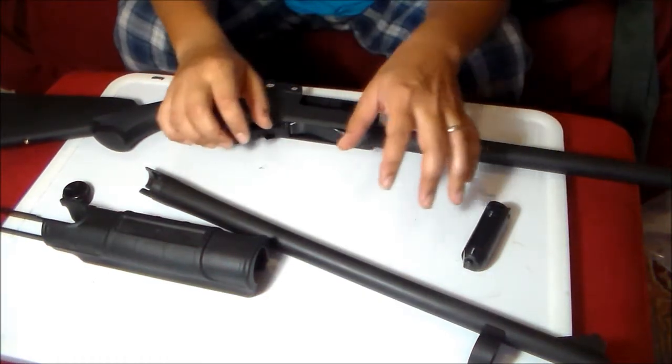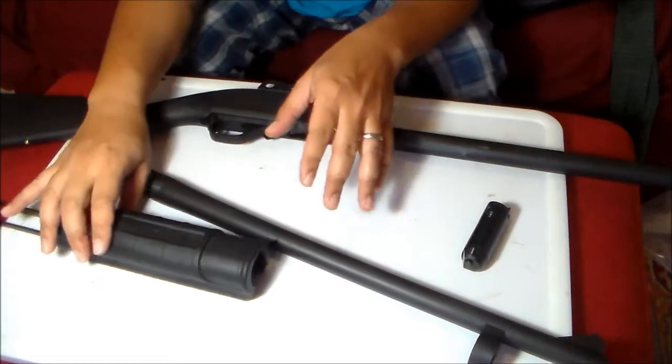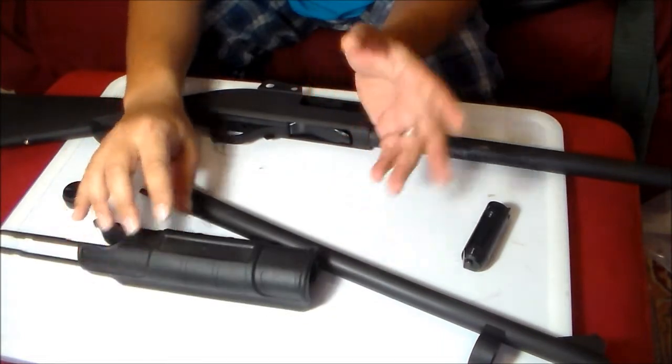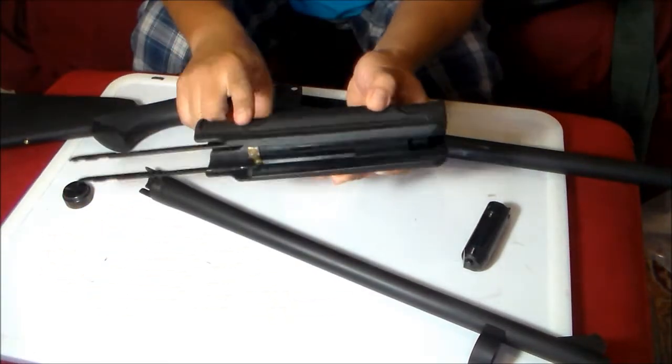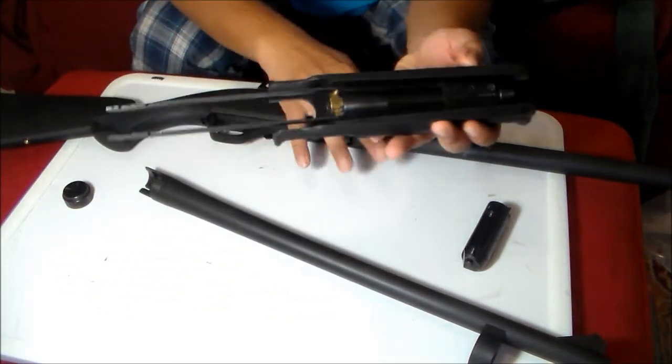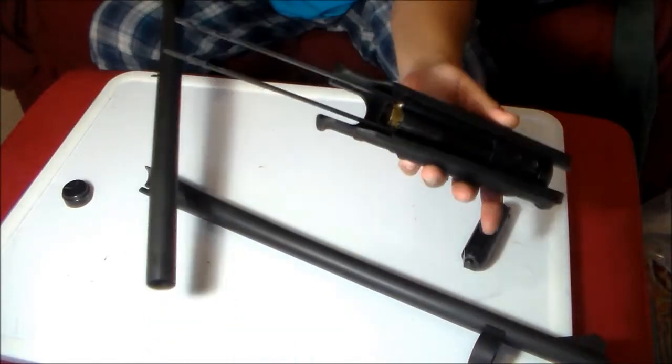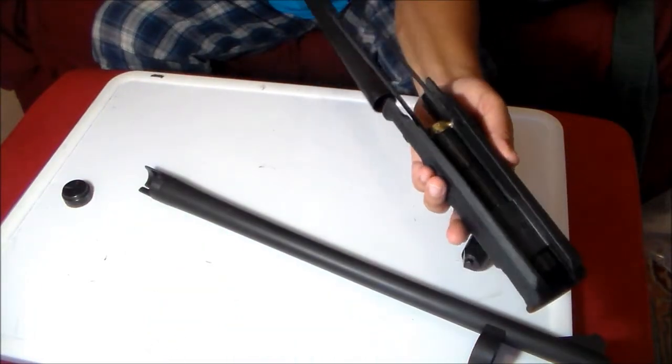Okay, putting it back together with the new forend, it's just the opposite of what we did earlier. Now insert the magazine tube inside the new forend.